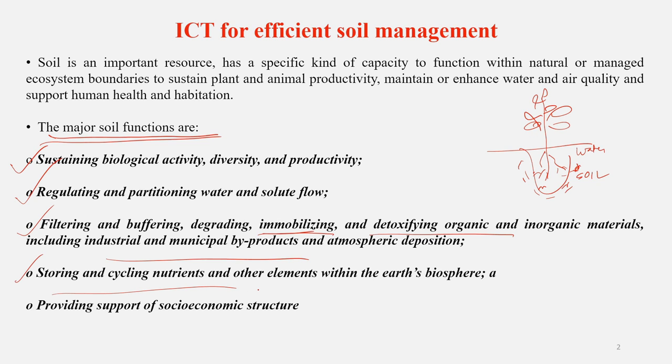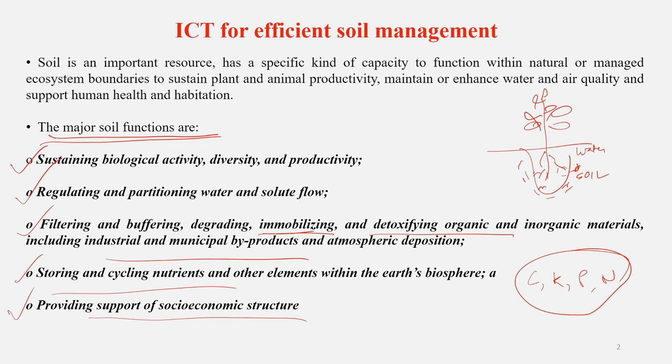Soil is also important for storing and cycling of nutrients. We have the carbon cycle, potassium cycle, phosphorus cycle, and nitrogen cycle — all these nutrient cycles are ongoing and soil plays a major role in running them. Soil also provides support for socio-economic structure by helping maintain food production, crops, and grains on which the livelihoods of many people depend. If soil goes wrong, the entire production system will go wrong, affecting livelihoods, and the entire socio-economic structure may get affected.